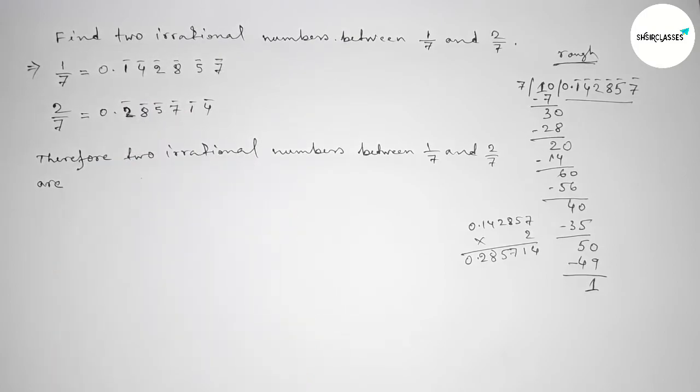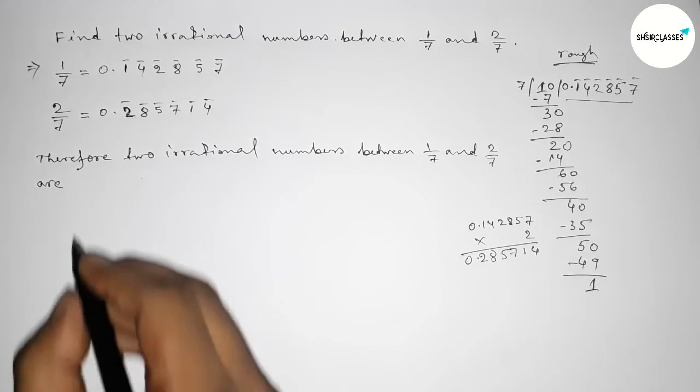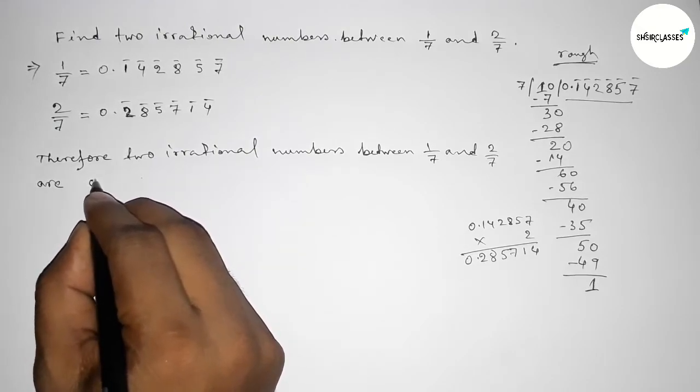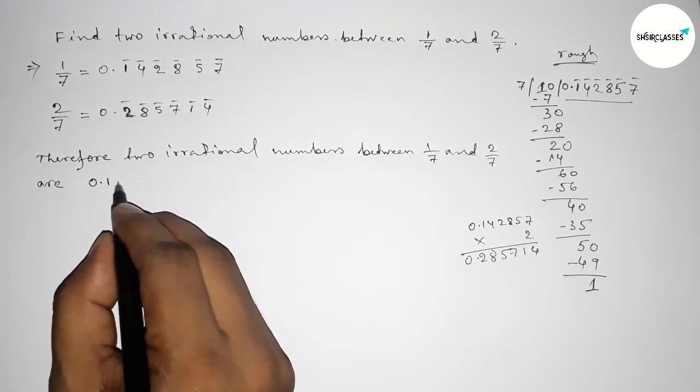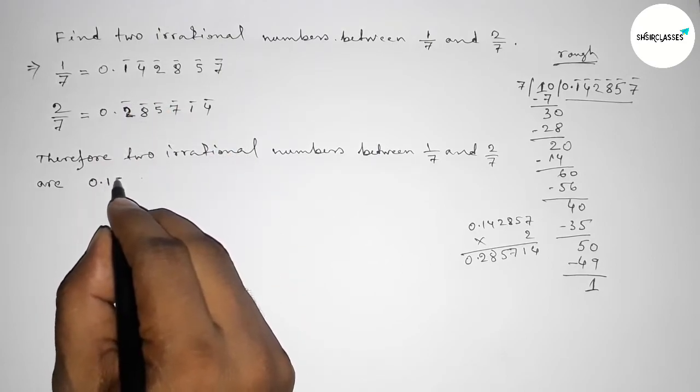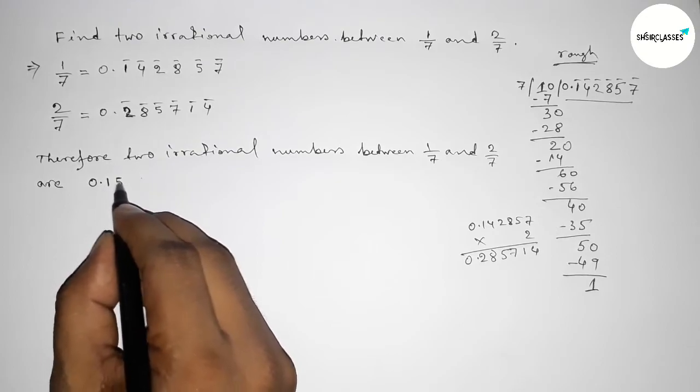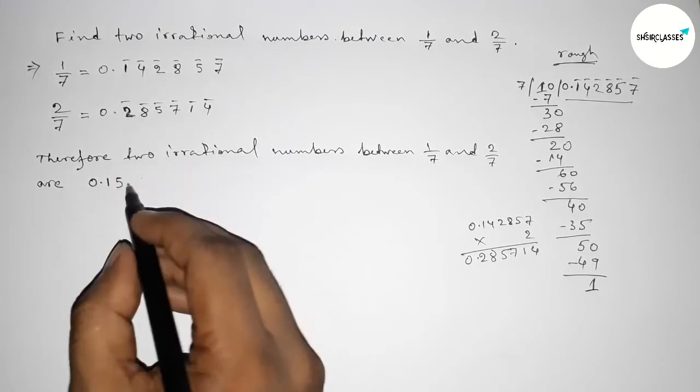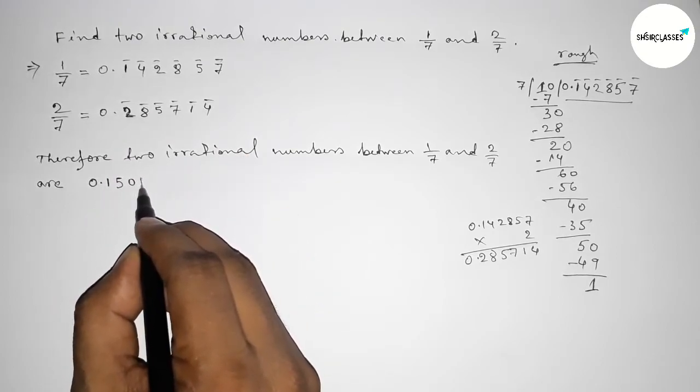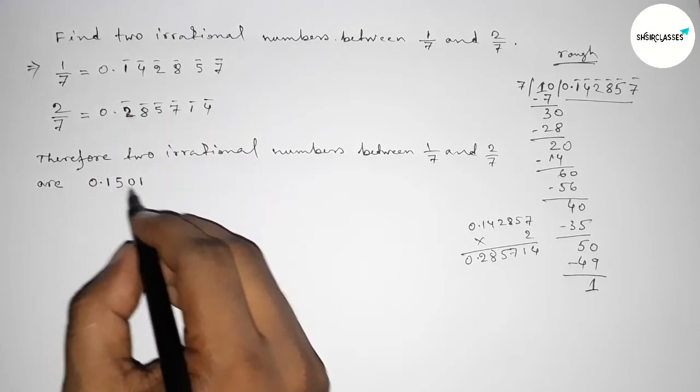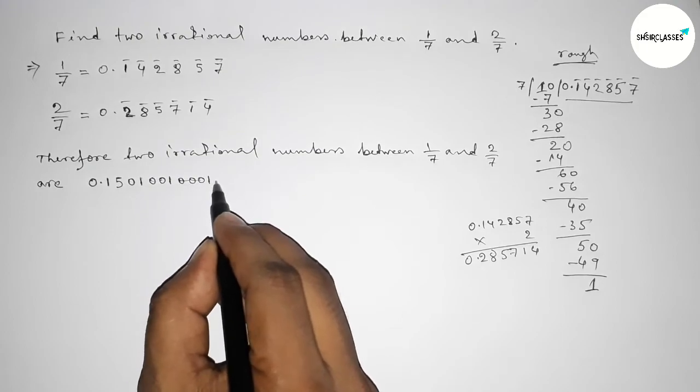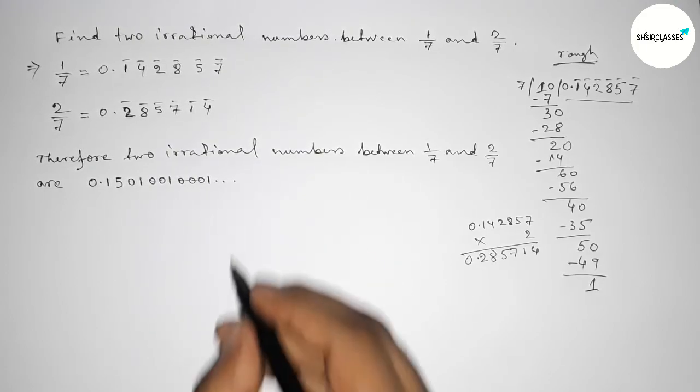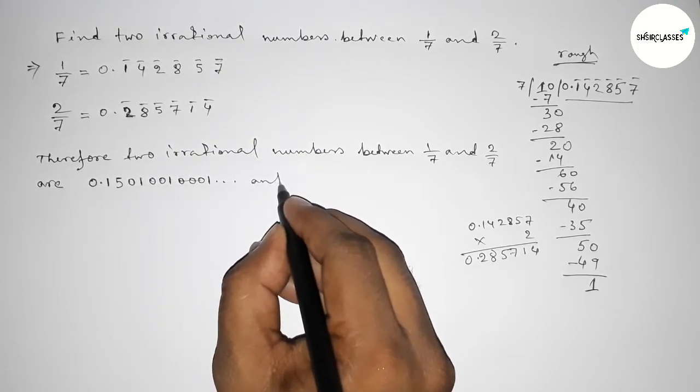So first finding two irrational numbers. First one is taking 0 point, this is starting here 1, so taking 1 and taking greater than 4, so 5. So this is obviously greater than 0.14. And now taking 10, then 1, then taking 20, 1, taking 30, 1. So by this way you can write one irrational number.